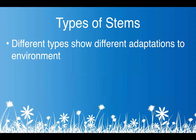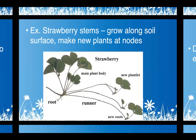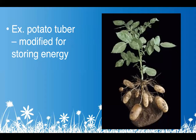Stems can evolve into different types to show adaptations to their environment. Strawberry stems are called runners because they grow along the soil surface — the plant grows close to the ground and runs along it, not climbing. The potato tuber — the actual potato — is part of the stem that's been modified for storing energy.